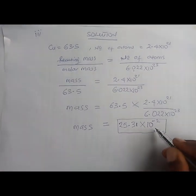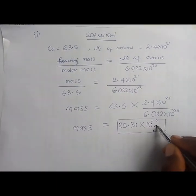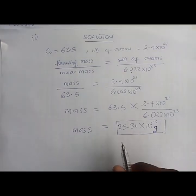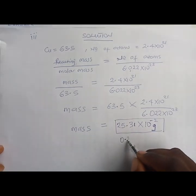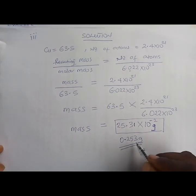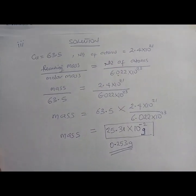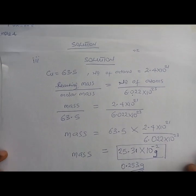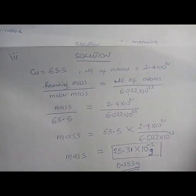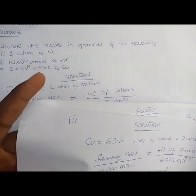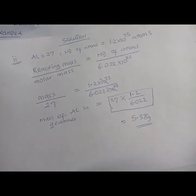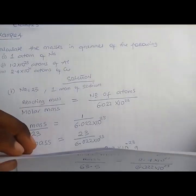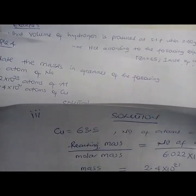The answer to part iii is 0.253 grams. That is the mass of copper. We are now through with solving example 4 — parts i, ii, and iii — and we're good to go into the next question.